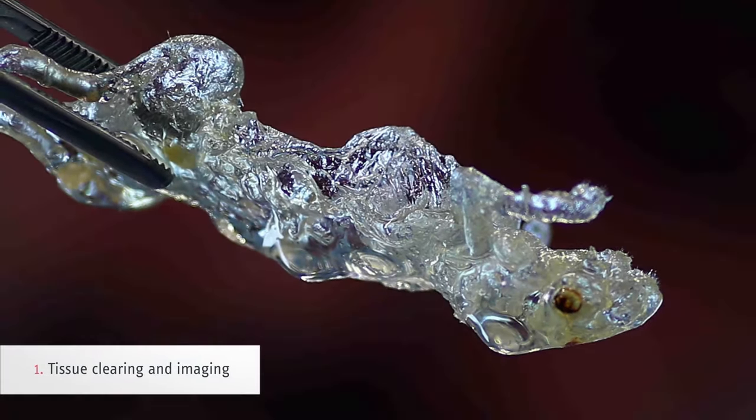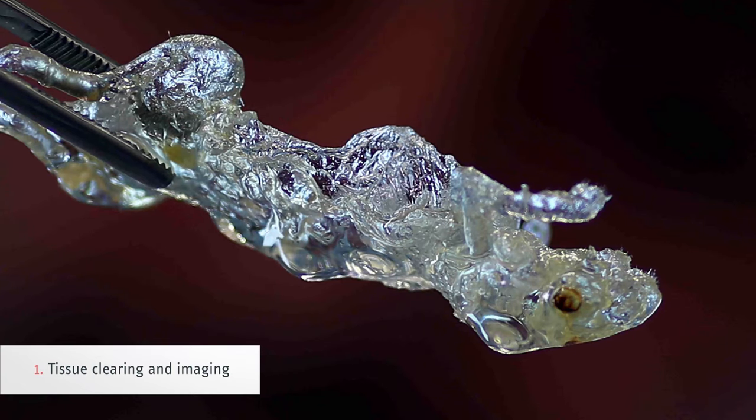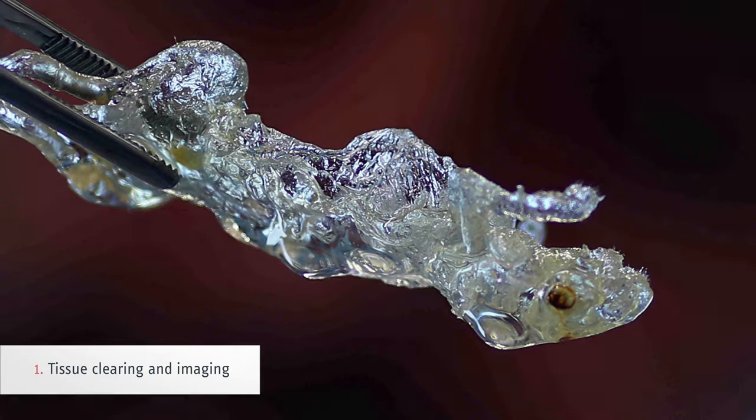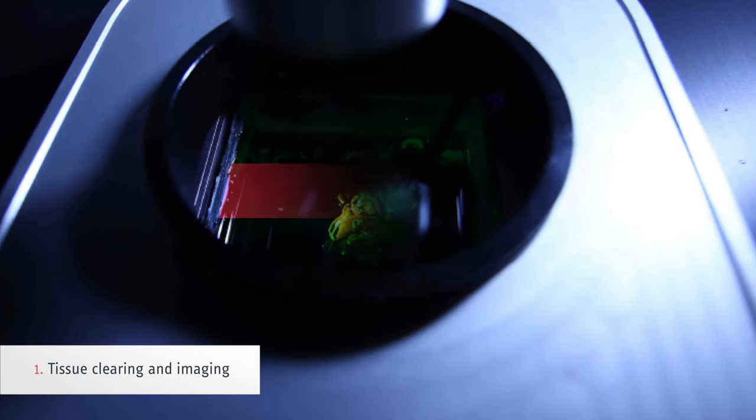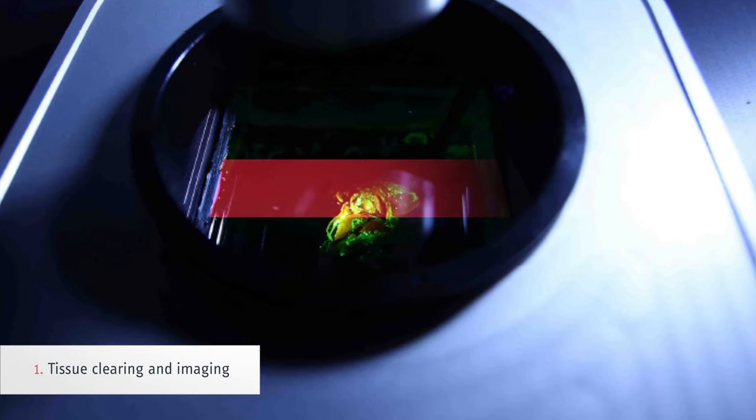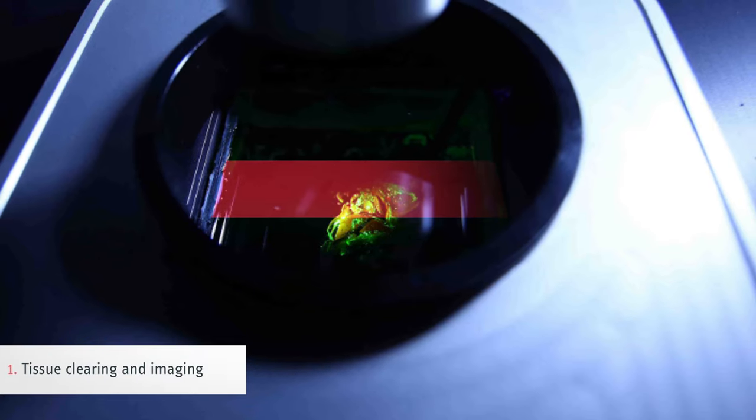One, whole mouse bodies are rendered transparent using a tissue-clearing method called VDISCO. The transparent mice are then imaged in 3D, allowing visualization of all metastases and even single, disseminated tumor cells.